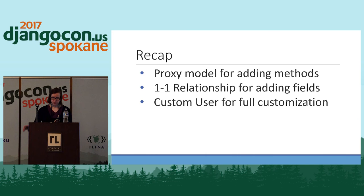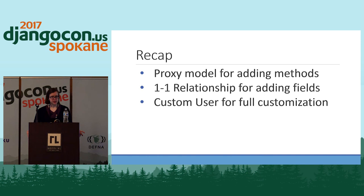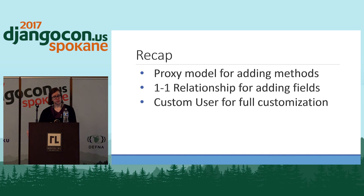Hopefully I have given you some great ideas on how you can customize your user model, and hopefully you might even feel less intimidated to poke around and do whatever you want with the user model. Just to recap: the proxy model is good if you just need to add a few methods, and you can do that at any time in your project. The one-to-one relationship option is really good if you want to add custom fields — advisable to do at the beginning of the project, with some additional setup needed. And if you want complete customization, you can replace Django's user model with your own using AbstractBaseUser to make things a little bit easier.